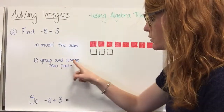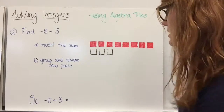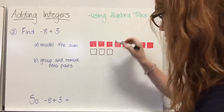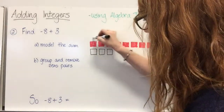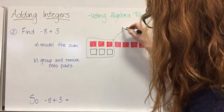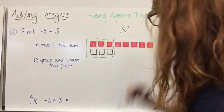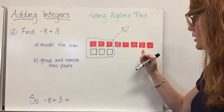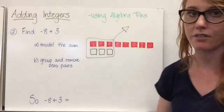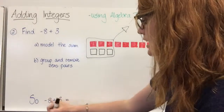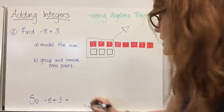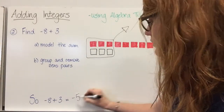First, we're going to group and remove the zero pairs. There are three zero pairs. We group those and remove them, and we are left with five negative tiles. So negative eight plus three equals negative five.